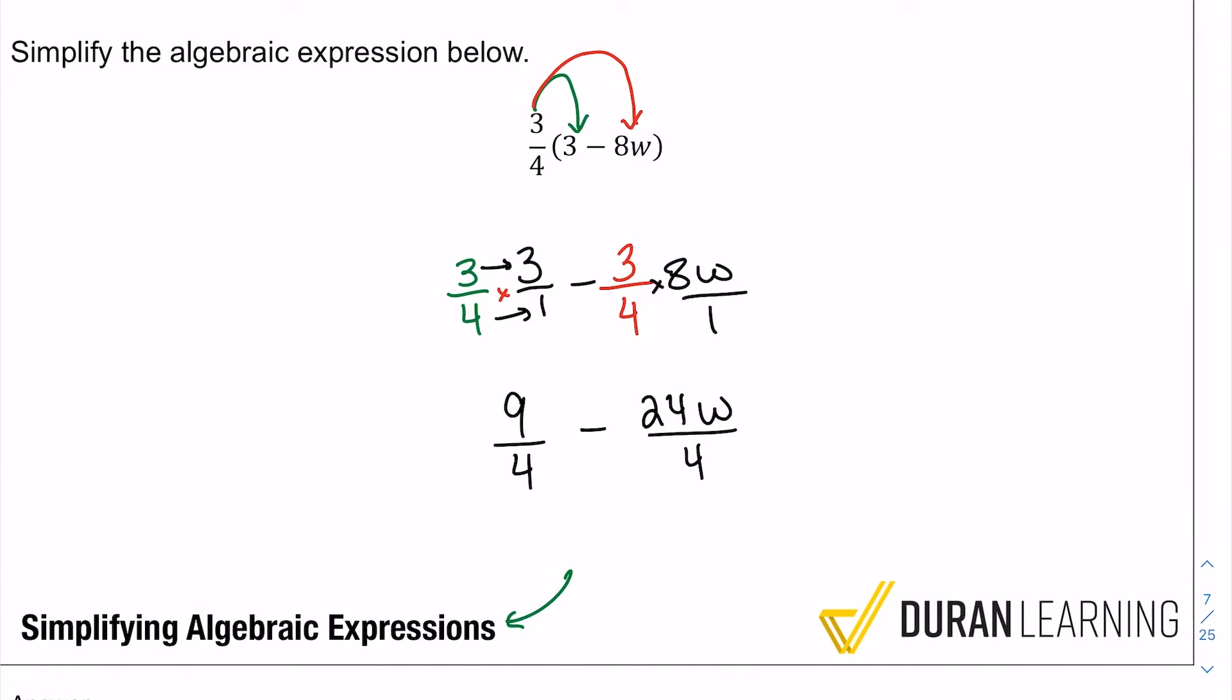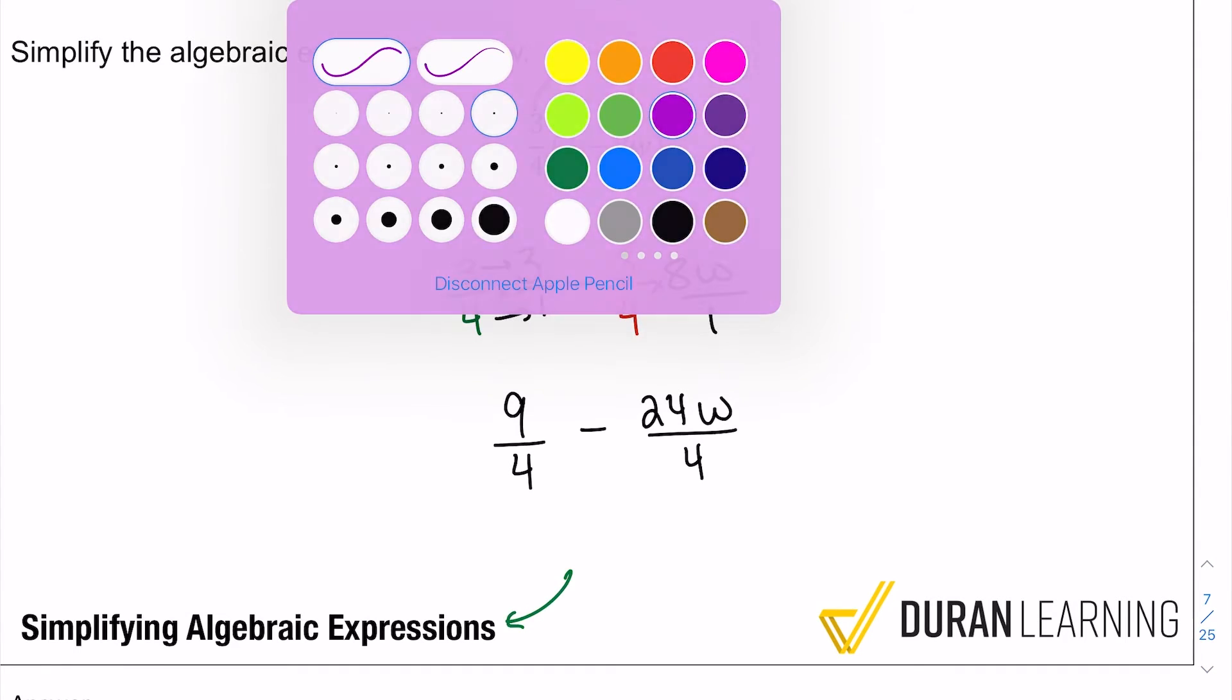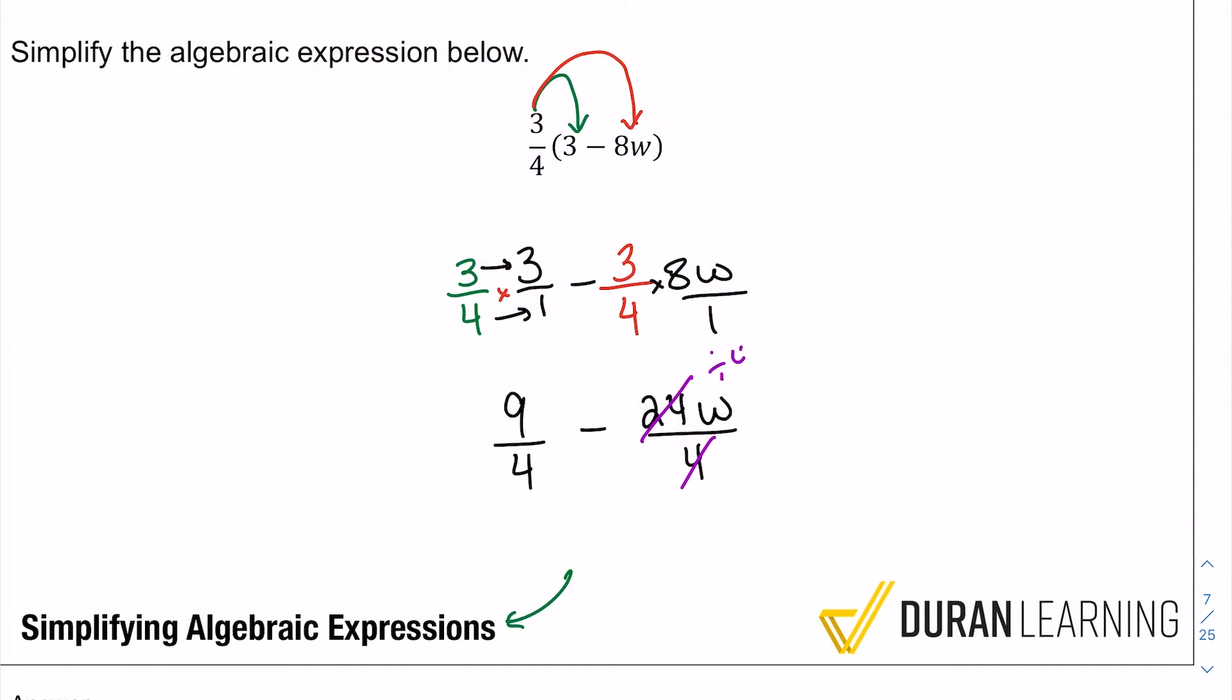So with that, what we have now is 24 divided by four which we can simplify. If we divide them both by four, that's going to be six w over one.